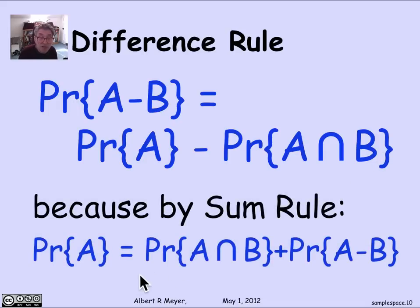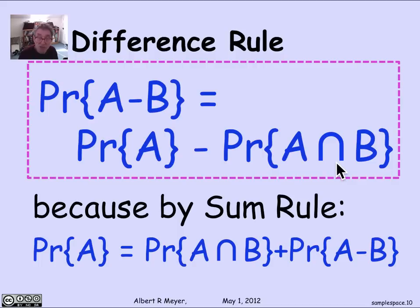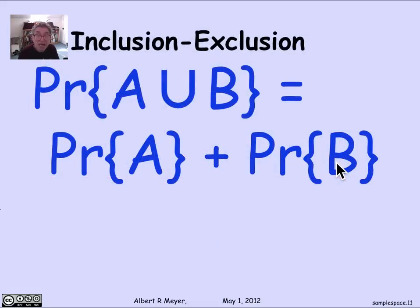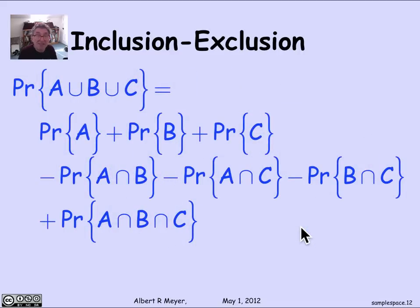Similarly, we have inclusion-exclusion: if A and B are not disjoint, then the probability of A union B equals the probability of A plus the probability of B minus the probability of the intersection. The proof is exactly like the corresponding rule for cardinalities of finite sets, and it generalizes to more sets. This is the inclusion-exclusion formula for three sets in terms of probability.